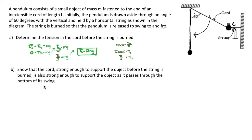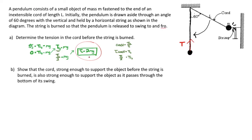Now for the part we've been waiting for: to show that the cord strong enough to support the object before the string is burned is also strong enough to support the object as it passes through the bottom of its swing. What this means is that we need to show mathematically that the tension at the bottom of the swing is less than or equal to 2MG. If so, we know the cord will be able to withstand it.